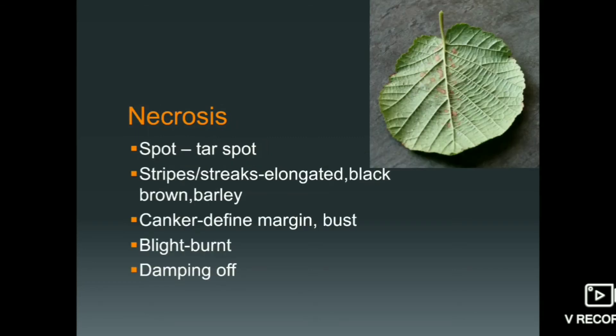Necrosis is the death of a particular part or tissue of a plant. The death of the tissue also happens in spot form. If you see circular spots on the plant's leaf, you can see them in a circular shape. Most of the time, circular-type spots appear in brown color. These spots are called spots because they appear in a circular way.